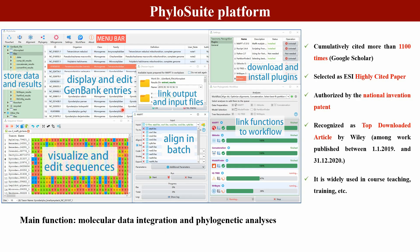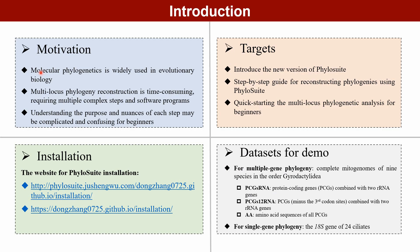PhyloSuite is a comprehensive and user-friendly platform that integrates and streamlines all steps of phylogenetic analysis, comprising both single-locus and multi-locus analyses. After the first version, PhyloSuite has gained recognition and is widely cited by peers around the world.